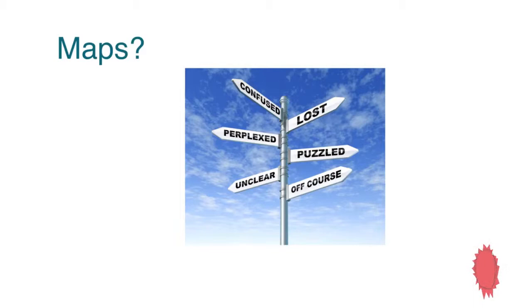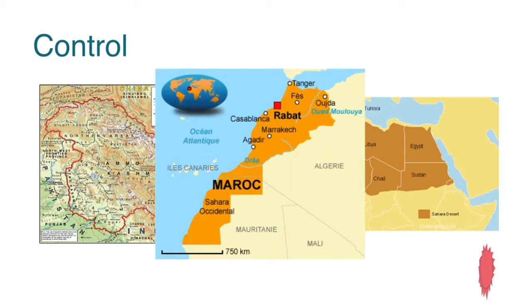The umbrella for today's presentations is open data, and within that I'm going to be talking about OpenStreetMap. If we start from the point that everything happens somewhere, that it's useful to know where something is happening, and that it's useful to be able to get to that place, we can draw the conclusion that maps are important. Maps traditionally have been about control — drawn by the rich, the exceptional, the winners, people who sailed west instead of east — and they represented the views of the cartographer or the person who commissioned them.